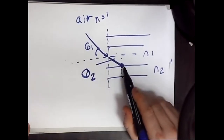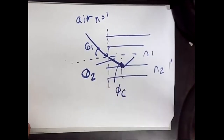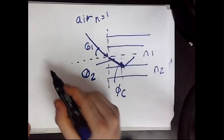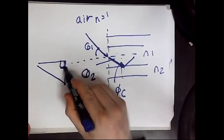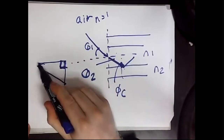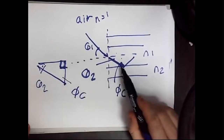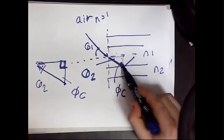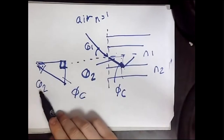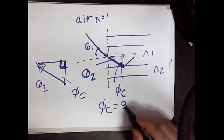From this triangle, theta_2 plus phi_c equals 90 degrees. In other words, phi_c = 90 - theta_2. Then, linking theta_1 with theta_2 using Snell's Law: since the first medium is air (N = 1), sin(theta_1) = N1 * sin(theta_2). Therefore, sin(theta_1) = N1 * sin(90 - phi_c) = N1 * cos(phi_c).